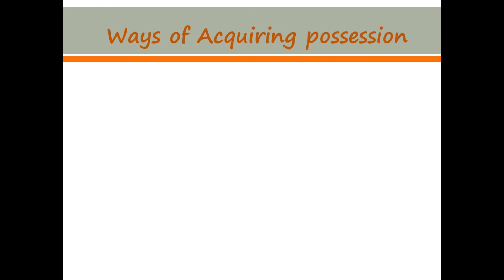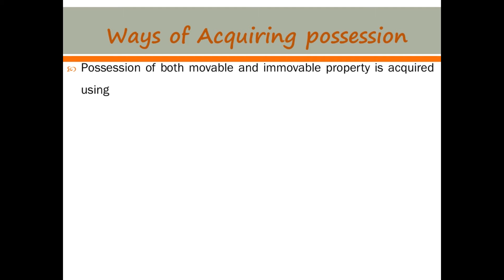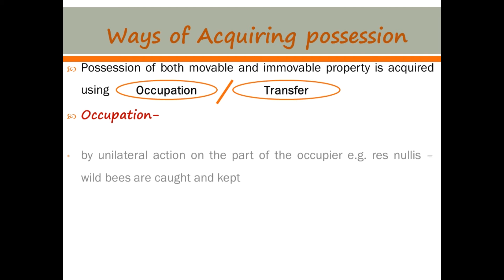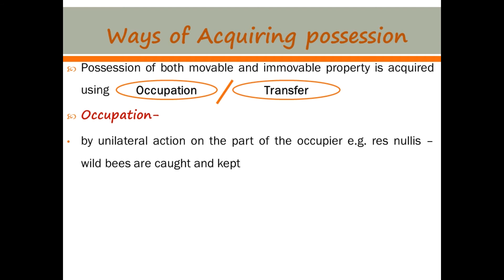Ways of acquiring possession is next. Possession of both movable and immovable property is acquired using occupation or transfer. For occupation, it is done by unilateral action on the part of the occupier — for instance, wild bees that are caught and kept, or a thief who steals a thing from the owner. Here we are talking about possession whether illegal or legal — it is just possession in general.